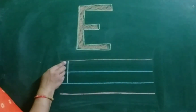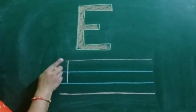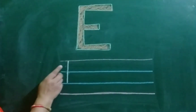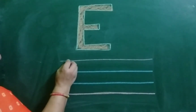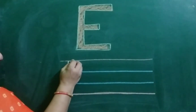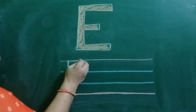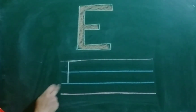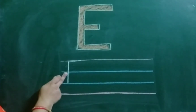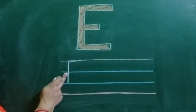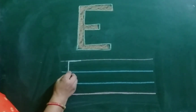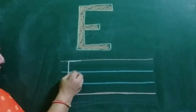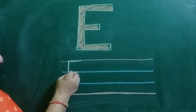Now keep your pencil on the first line and draw one sleeping line to the right. Now keep your pencil on the second line. Draw one sleeping line to the right.